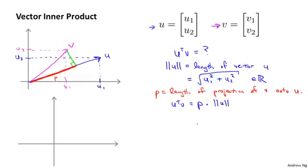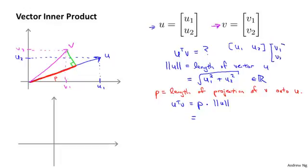It's possible to show that the inner product u transpose v is going to be equal to p times the norm of the vector u. This is one way to compute the inner product. If you do the geometry and figure out what p is and what the norm of u is, this gives the same answer as the other way: u transpose v equals u1*v1 plus u2*v2. It's a theorem of linear algebra that these two formulas give the same answer.